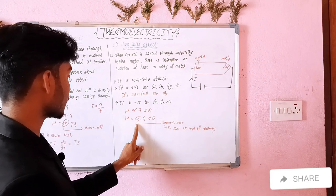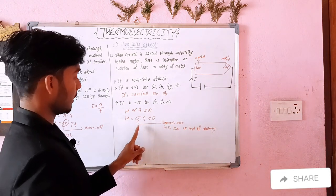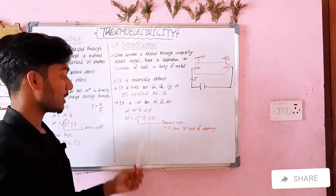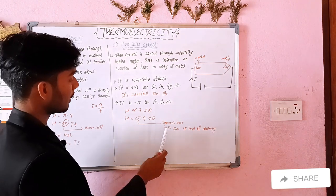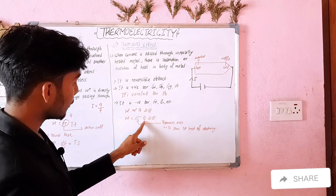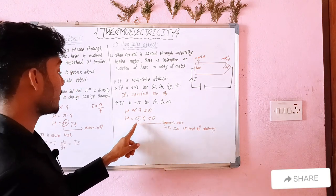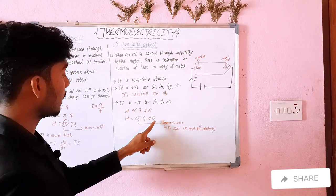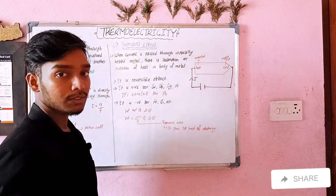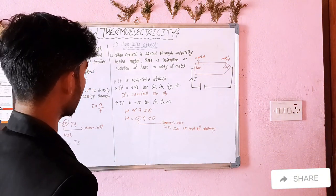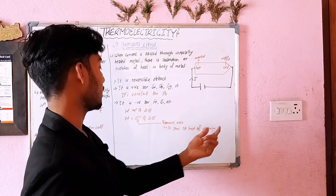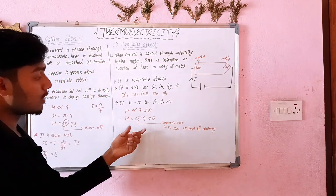Mathematically, the Thomson effect heat is H = σ × Q × Δθ, where σ is the Thomson coefficient and Δθ is the temperature difference. The Thomson coefficient σ represents the specific heat of electricity. The Thomson effect can be positive (for copper, antimony etc.), zero or nil (for lead), or negative (for iron).